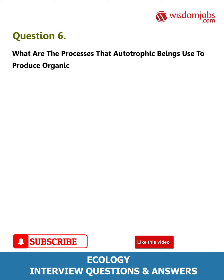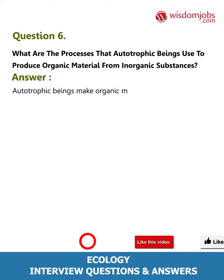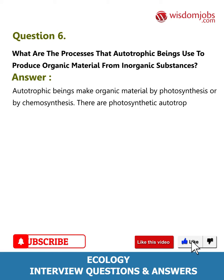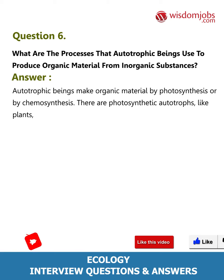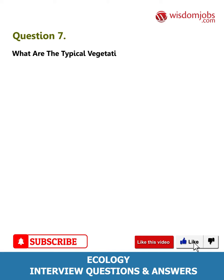Question 6: What are the processes that autotrophic beings use to produce organic material from inorganic substances? Autotrophic beings make organic material by photosynthesis or by chemosynthesis. There are photosynthetic autotrophs like plants, and chemosynthetic autotrophs like some bacteria.